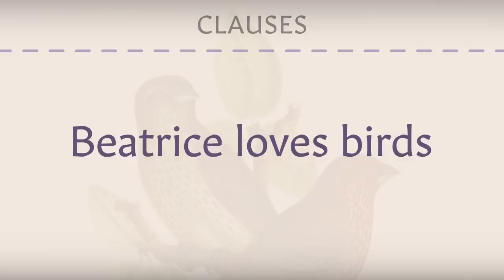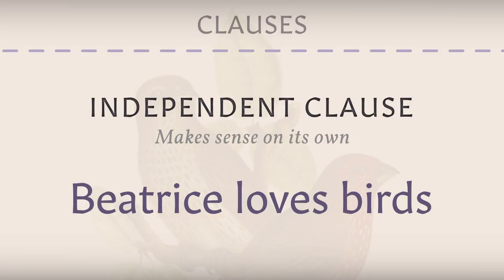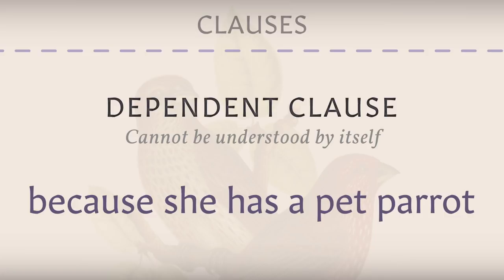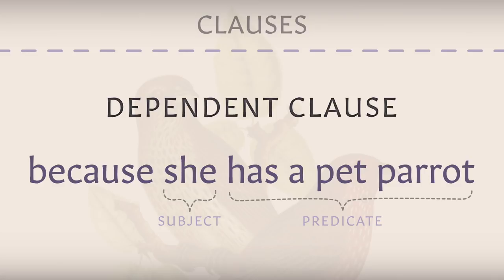There are also dependent clauses, which contain a subject and a predicate but cannot be understood by themselves. For example, "Because she has a pet parrot" is a dependent clause. "She" is the subject and "has a pet parrot" is the predicate, but it does not make sense alone — who is she, and where does this "because" come from?